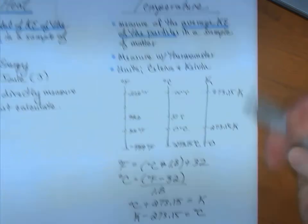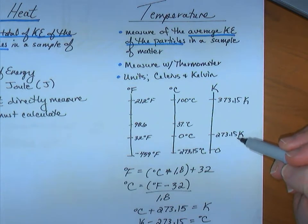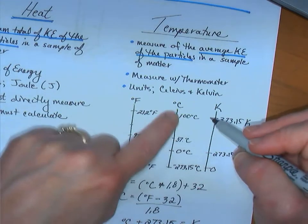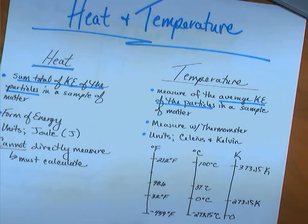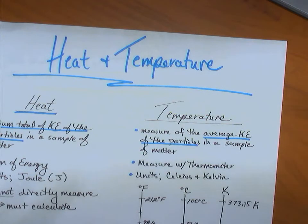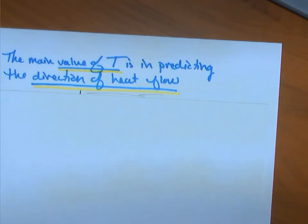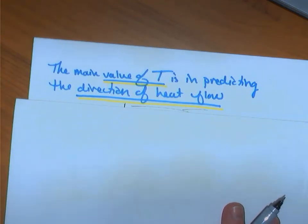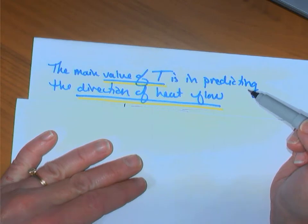There are no Kelvin degrees that are negative. And notice, Kelvin doesn't use a degree sign, but it's okay if you would. It would never be marked wrong. Okay, so we can measure temperature, a measure of the average kinetic energy. If I can share a quote from Mr. Jennings, who was legendary in his teaching of chemistry at Peter's Township High School. He shared a quote that I think is the best true explanation of what temperature is. He said this, the main value of temperature is its prediction of heat flow. The main value of temperature is its prediction of heat flow. What does that mean?